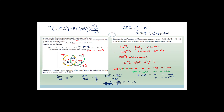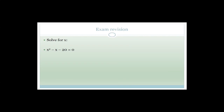That concludes our probability section. We'll encounter more probability questions in the final exam revision. Now we begin basic exam revision using the March 2015 supplementary paper — a high quality paper. If you want more difficult questions, always choose supplementary papers, as they tend to be harder than the end-of-year papers because students have had three extra months to study.